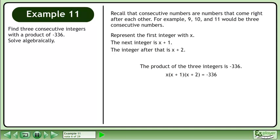The product of the three integers is negative 336. Multiply the binomials, then multiply x through the brackets. Add 336 to both sides to get x³ + 3x² + 2x + 336 = 0.